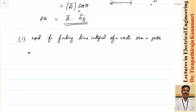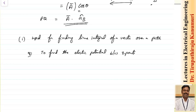The scalar projection has several applications. The first is it is used for finding the line integral of a vector over a path. One of the applications in electromagnetic field is this is used to find the electric potential between two points in an electric field.